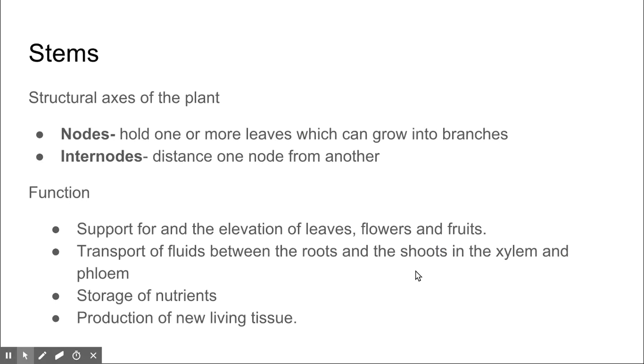Another structure is the stem, which is the structural axis of the plant. The stem has nodes and internodes. Nodes is where it can hold leaves which go into branches, and internodes are the structures which distance one node from another. The function of the stem is to support not only the trunk of the tree or plant, but to allow the leaves, flowers and fruits to elevate off the ground. It also transports fluids from the roots to the shoots through the xylem and phloem, which move all the way up the stem. It stores nutrients and is the production site of living tissue.